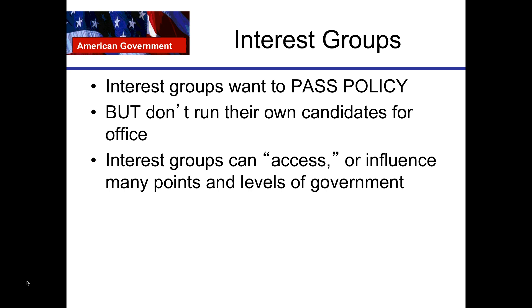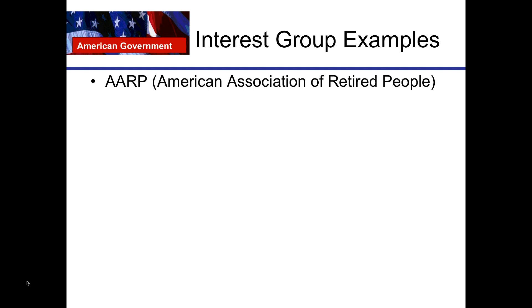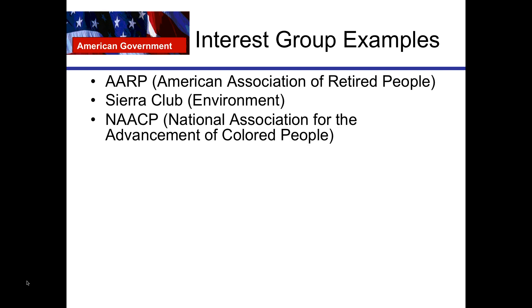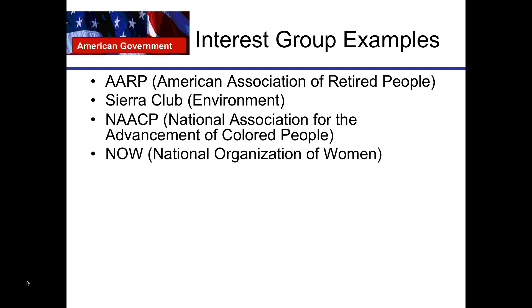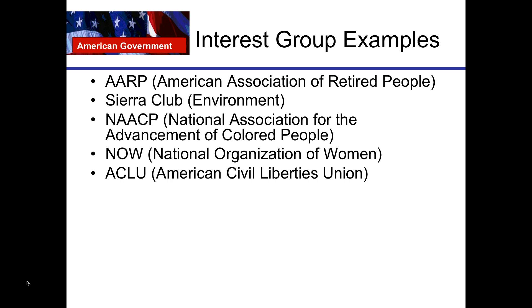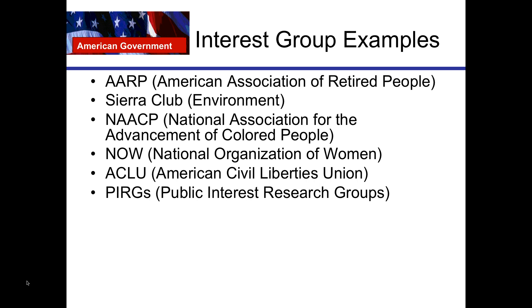What are some examples of interest groups that seek to influence government? You have the AARP, the American Association of Retired People — they represent the interests of the elderly. The Sierra Club represents the interests of the environment. The NAACP, the National Association for the Advancement of Colored People, represents the interests of African Americans. The National Organization for Women deals with women's issues. The ACLU, the American Civil Liberties Union, deals with civil liberty issues. Public Interest Research Groups, PIRGs.